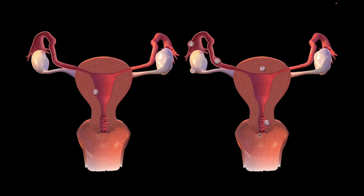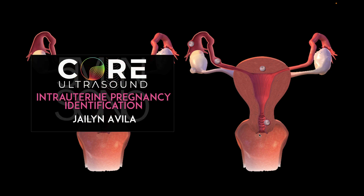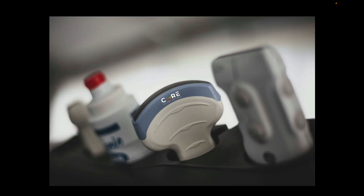If you need a review on how to identify an intrauterine pregnancy, please review that 5-minute SONO video. Your probe of choice for this examination is going to be the curvilinear transducer. You can use the phased array transducer, and in some situations you might be able to use a linear transducer, but the curvilinear is very likely going to give you the best resolution for what you need.